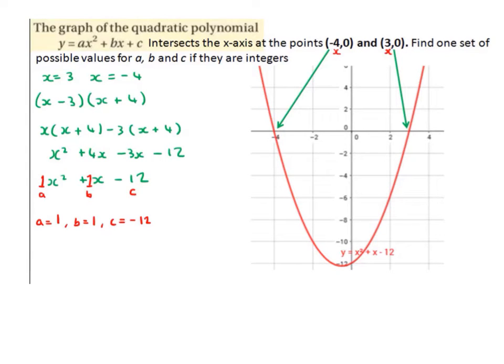And then simplifying, 4x minus 3x is x or 1x. So we end up with x squared, which is 1x squared, plus 1x minus 12.